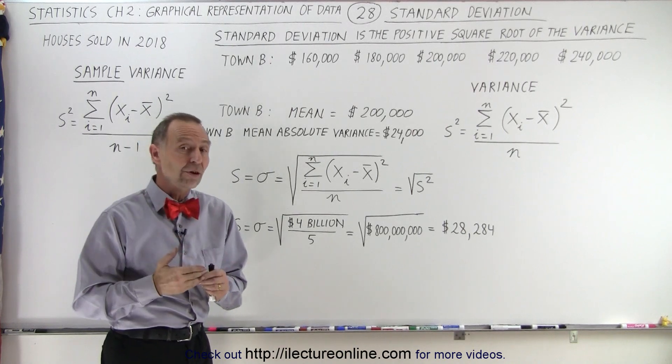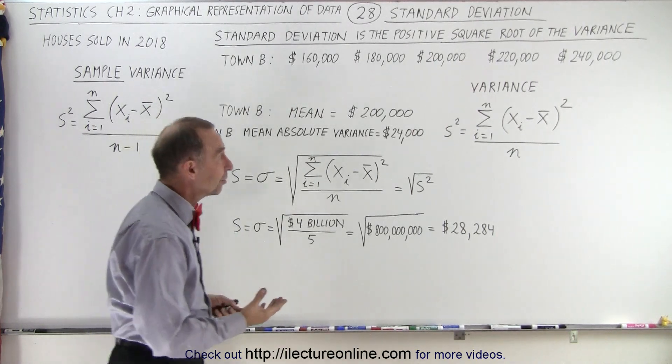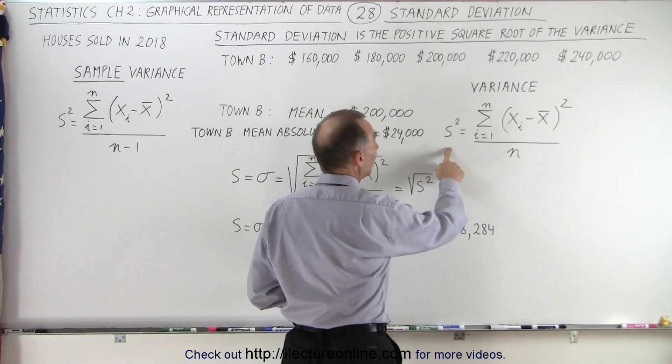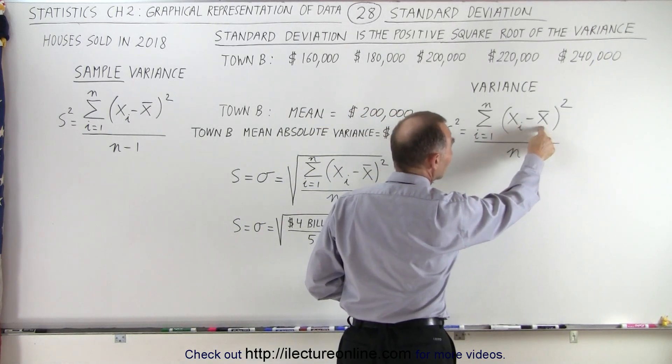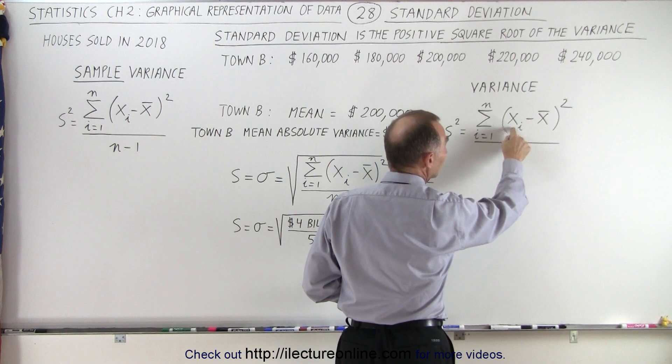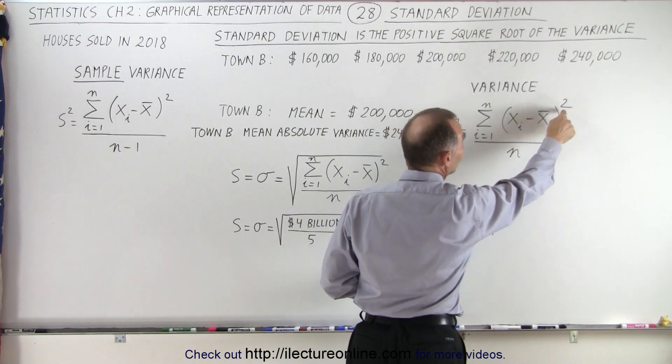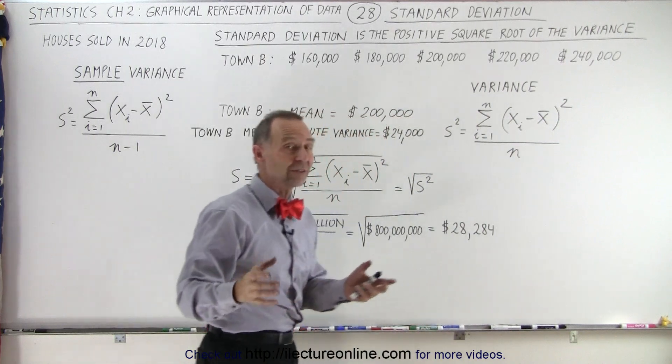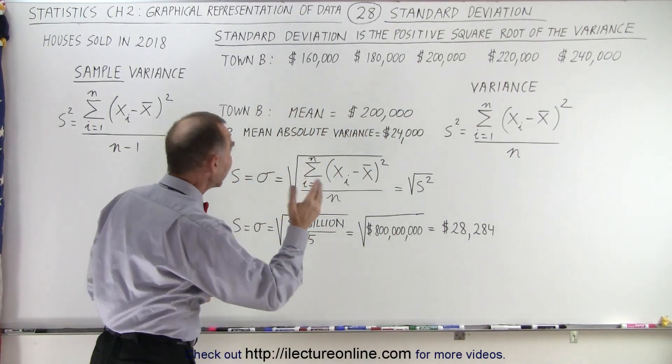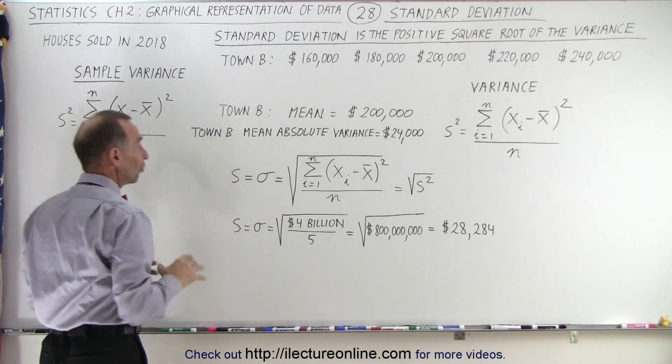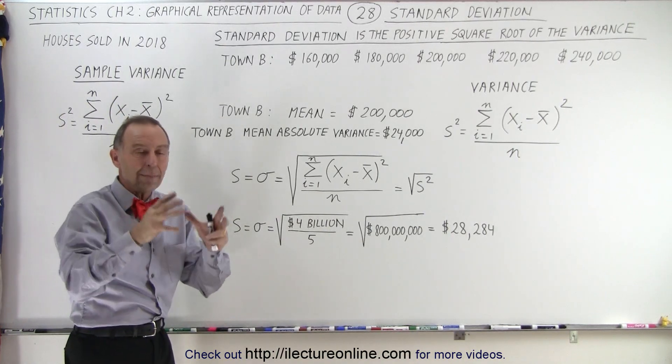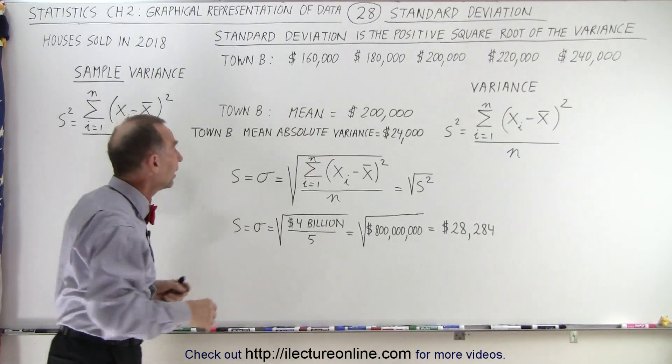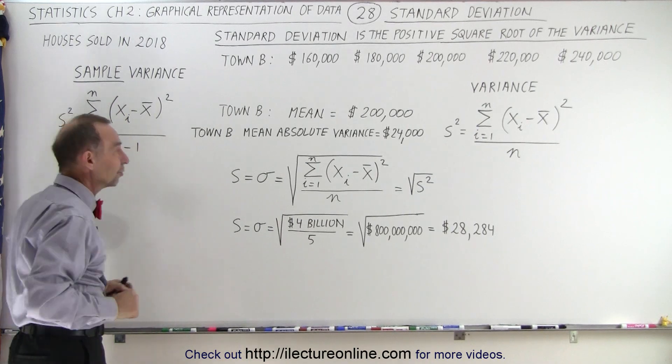In the last couple of videos, we showed you how to calculate the variance. The variance was calculated by taking the difference between the average value and individual values. We take those differences, we square them, we sum them all up, and divide by the total number of values that we're dealing with. Now, in the case of a sample variance, where the numbers we're dealing with is simply a sampling of a greater population, then we need to divide by n minus 1.